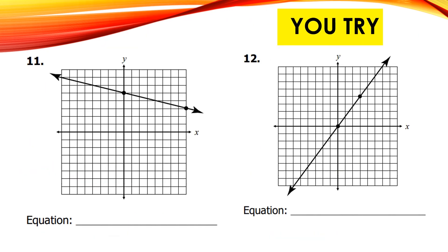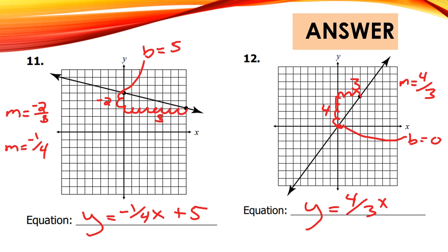I have two problems I'd like for you to try on your own — go ahead and pause the video. All right, I have the answers right here. Note that on number 12 there is no b. If your b is 0, you don't put anything — you don't write plus 0. If your b or y-intercept is 0, you just write your slope term, and there's an understood b of 0 when it is not written.